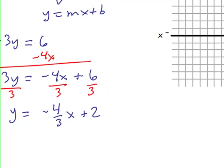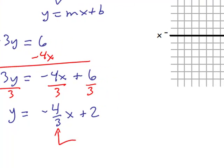And the great thing about this is we now have the slope. M is negative 4 thirds, and the y-intercept, which gives us the point 0, 2.